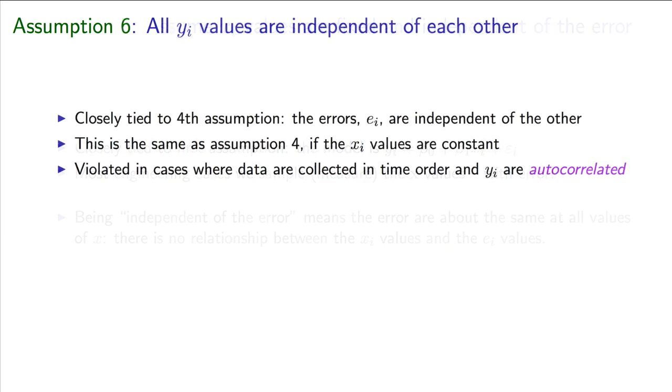Our final, sixth assumption is that the y values are independent of each other. This is closely tied to the assumption that the errors are independent of each other, and in fact follows from it, provided the x values are constant and measured without error. Again, this idea that the y values are independent is often violated in situations where we collect the data in time order, close to each other, on a slow-moving process.